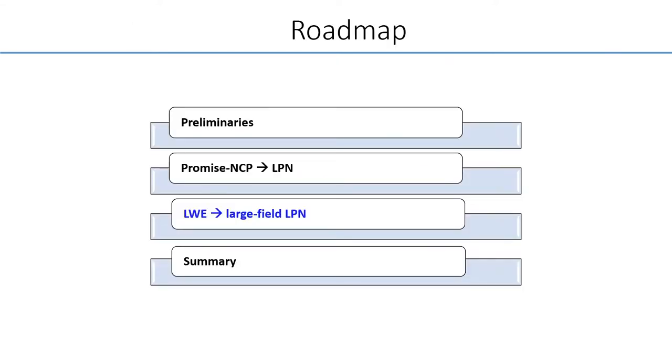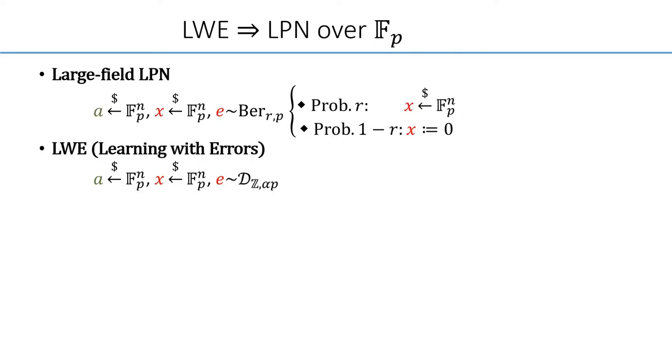In general, there are two ways to generalize LPN to a large modulus P. If we use generalized Bernoulli distribution for the noise, namely E is either 0 or uniformly distributed over GF_P, then it becomes the so-called large-field LPN. Alternatively, if we use discrete Gaussian for the noise, then the problem is called LWE.